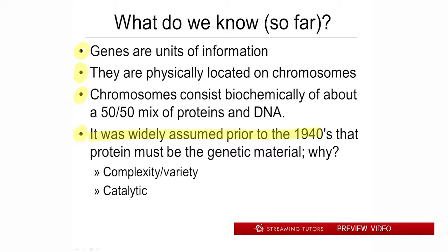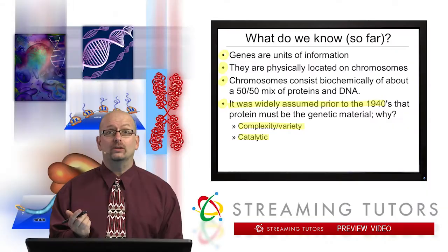In theory, you can have a lot more variability with protein — but remember that DVD. There are only two symbols that can encode five hours of an epic movie in high definition. You really don't need a lot of subunits to encode a lot of information. It was also incorrect, but thought in the early days that DNA might just be a repeating polymer, almost like starch. Since proteins were catalytic, many people described the genetic material almost as a super enzyme. All biochemists were into protein in those days, but turns out they were wrong.